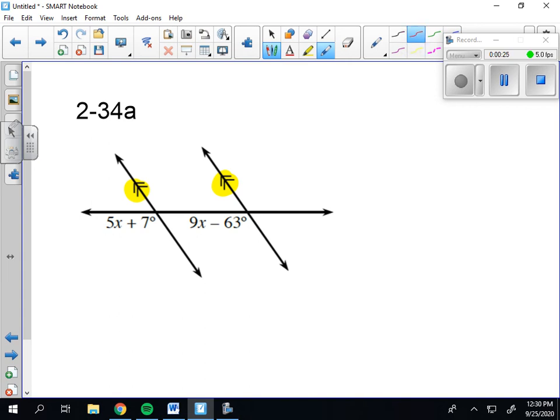These two angles are corresponding because they're in the same position at different points of intersection, and I know that corresponding angles are equal when lines are parallel.